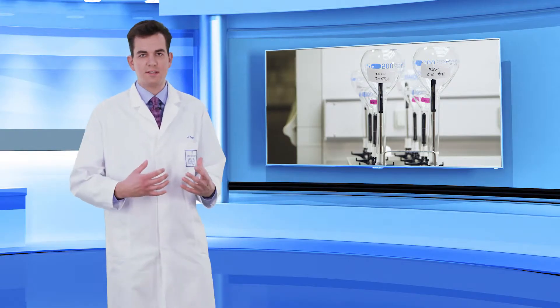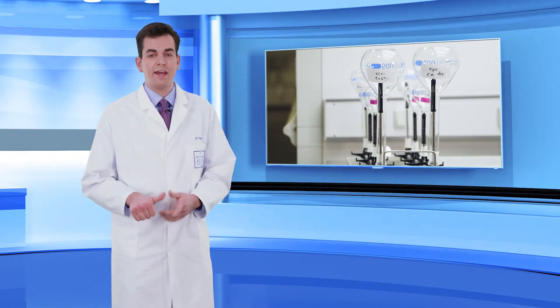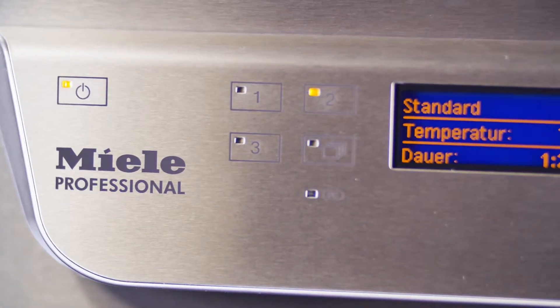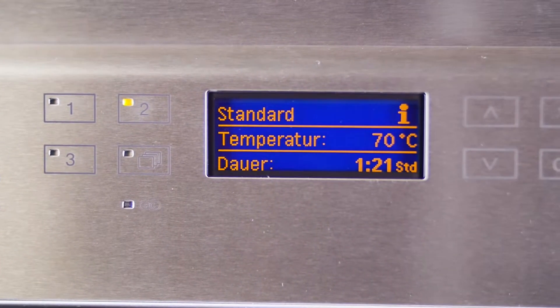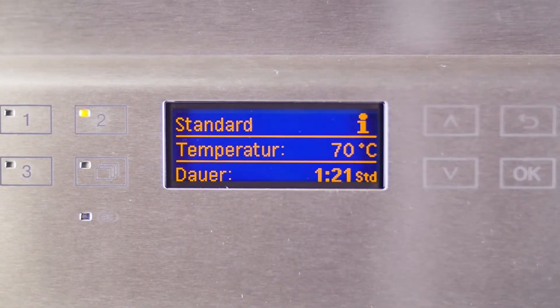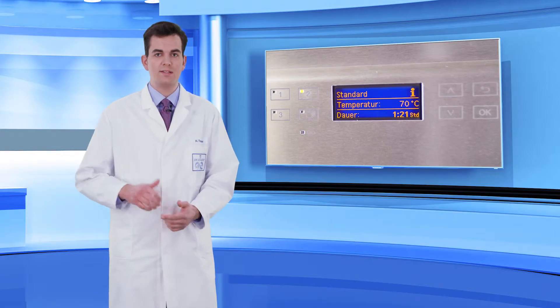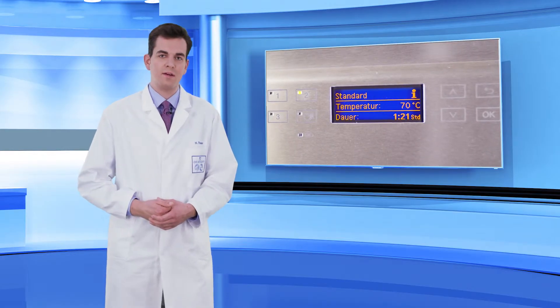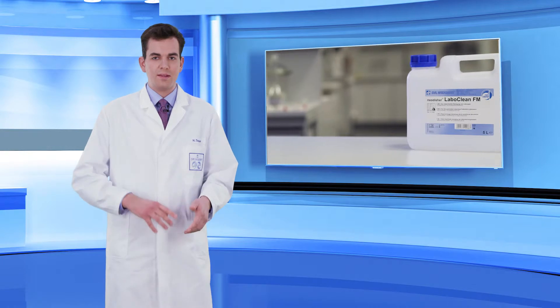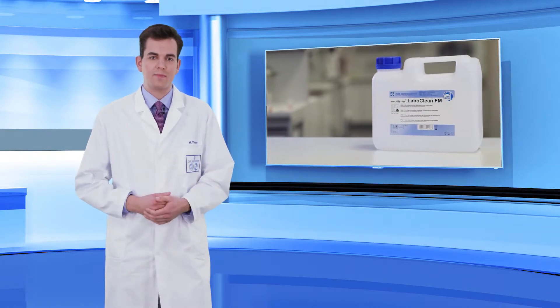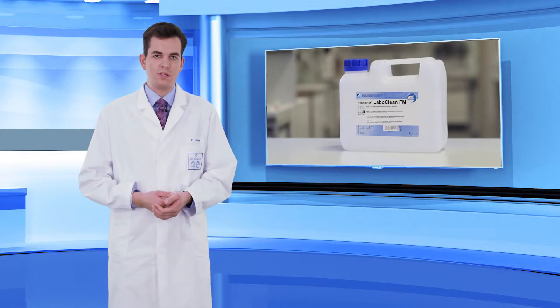The following things should be considered in this context. First, the temperature should be set to support label removal, at least 70 degrees Celsius. Second, the choice of the process chemical. A detergent with surfactants aids removal.